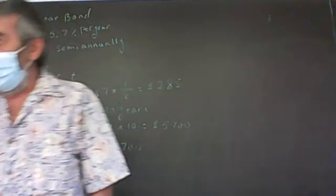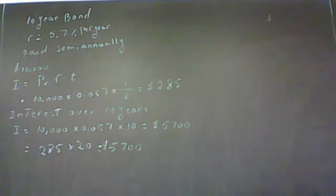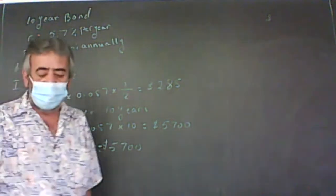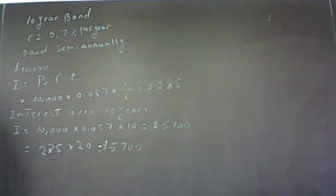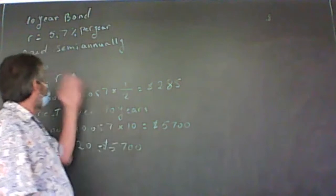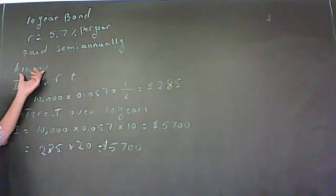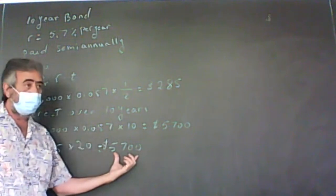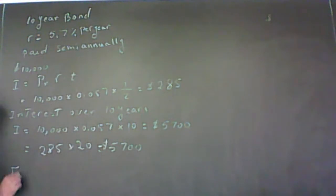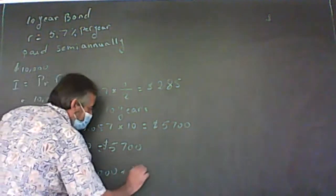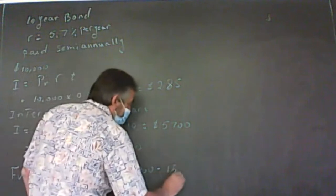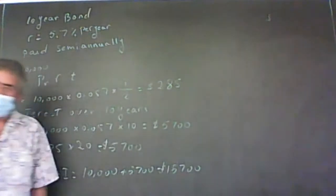One more question on that problem: how much money would San Diego have in 10 years if he saved all his money? He will have $15,700 — whatever he started with plus all the interest he collected. If he was saving, the future value would be simply the present value plus the interest: $10,000 plus $5,700 equals $15,700.